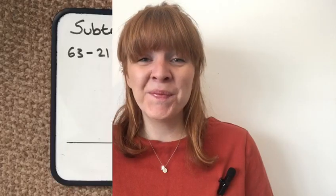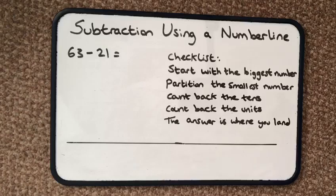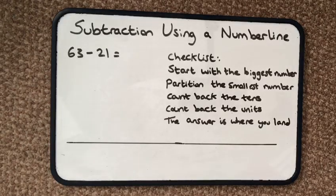Hi, it's Alex from Tutoring Heroes again and today we're going to look at some maths together. Let's go and take a look and see what we're doing. So we're looking at subtraction using a number line. We're going to solve 63 take away 21.